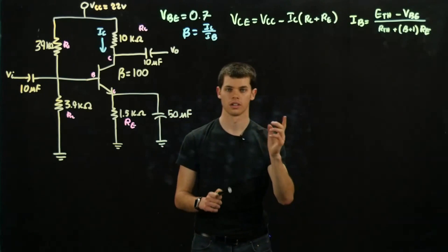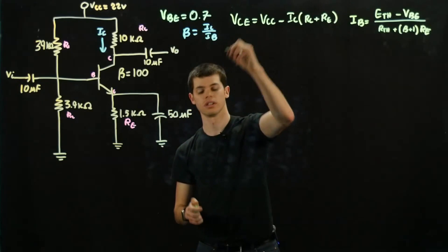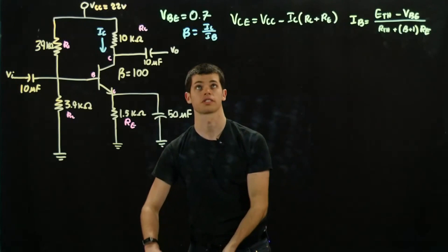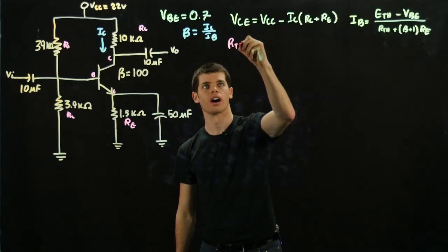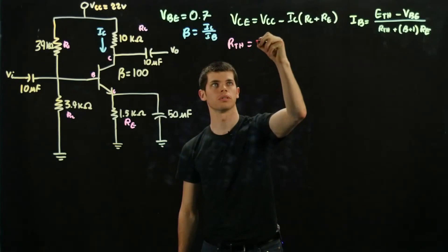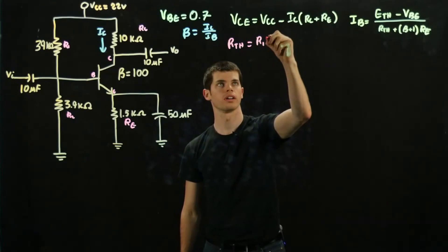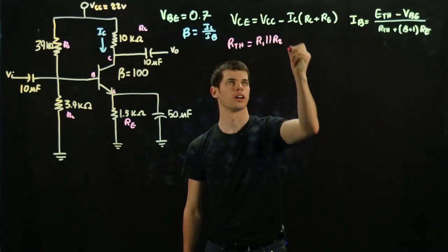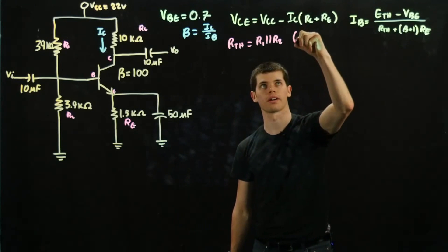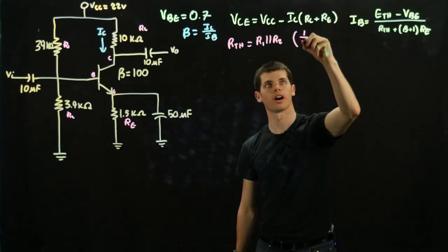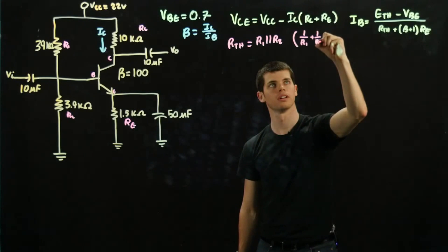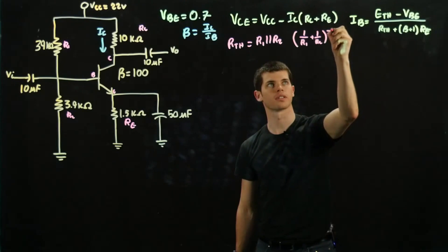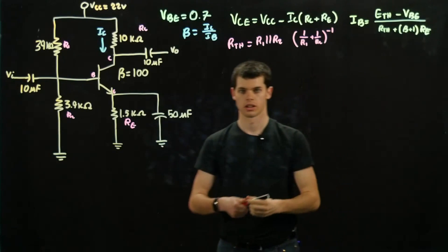Alright, so now we're going to want to find R-thevenin. I'm going to write in a nicer color, everything's starting to look the same. R-thevenin is equal to R1 in parallel with R2. And now just a quick refresher if you don't remember: with parallel, it's just 1 over R1 plus 1 over R2, and then we're going to want to take the inverse of that.